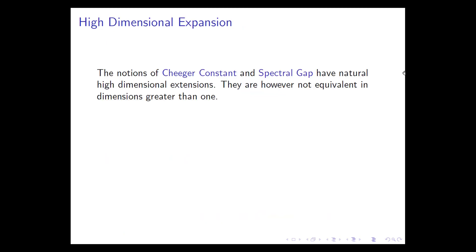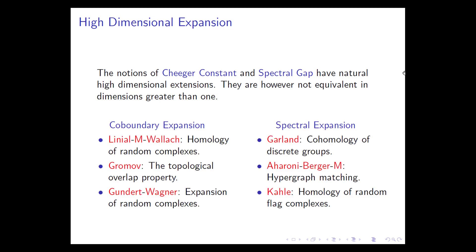Now the question is how to generalize these to high dimensions. It turns out that both notions—the Cheeger constant and the spectral gap—have analogs in higher dimensions. They are decent analogs, not just superficial ones, but they are not equivalent. The first is co-boundary expansion, which came up in work on the homology of random complexes and in Gromov's famous work on the topological overlap property, with subsequent work by Gundert and Wagner on expansion of random complexes.